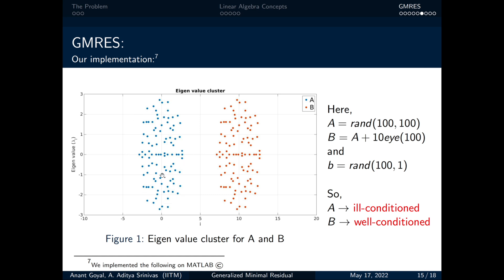The blue dots indicate the eigenvalues of A and orange dot represents the eigenvalues of B. The eigenvalues of A are clustered near 0 and that of B are clustered away from 0 in this case which is 10.